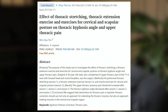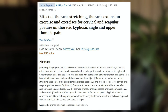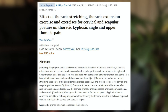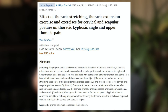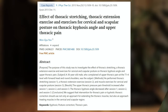In 2013, the Journal of Physical Therapy Science published a case study on the effect of thoracic stretching and thoracic extension exercises for cervical and scapular posture on thoracic kyphosis angle and upper thoracic pain. A 36-year-old male with upper back pain, forward head posture, and rounded shoulders did a series of stretches and thoracic extension exercises. The results showed that after a few sessions, the upper back hump decreased and pain tolerance improved. I really hope these exercises give you the same results to help you gain better posture and live life without pain.